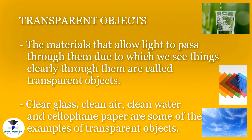Transparent objects. The materials that allow light to pass through them, due to which we can see things clearly, are called transparent objects. Clear glass, clean air, clean water and cellophane paper are some examples of transparent objects.